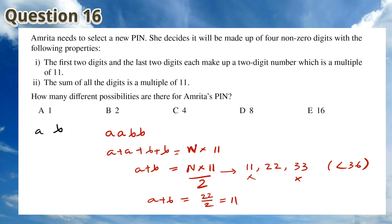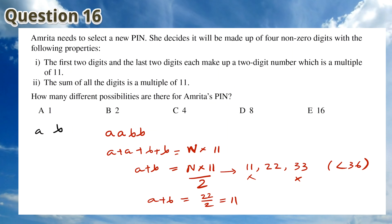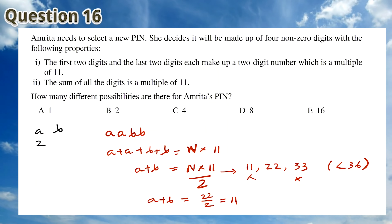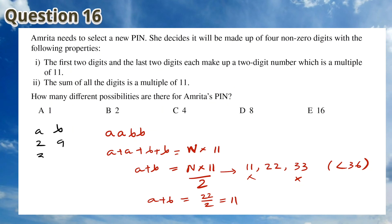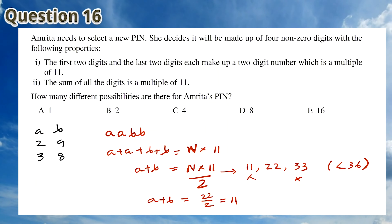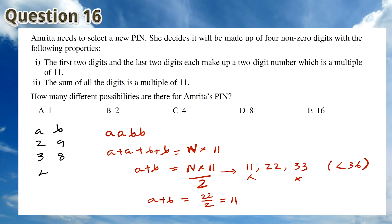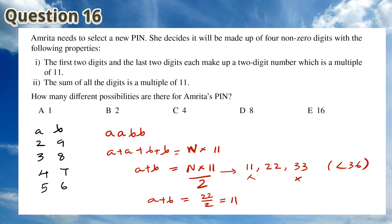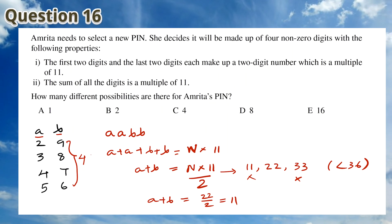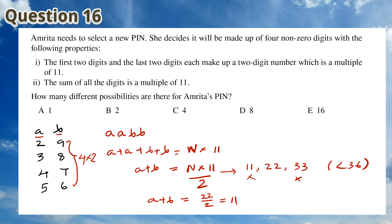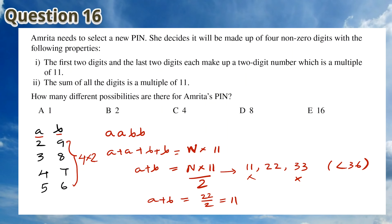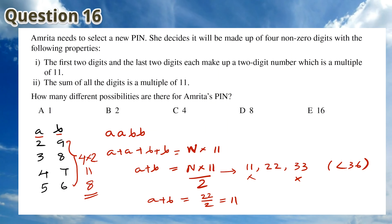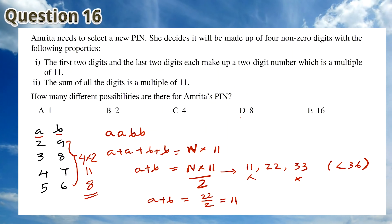We can write down each of the possible values of A and B: 2 and 9, 3 and 8, 4 and 7, 5 and 6. This is a total of 4 values. However, we can reverse them, so we multiply by 2, giving us a total of 8. This means that the answer is D.